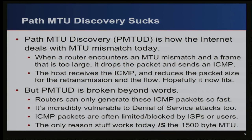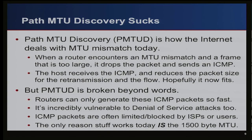Path MTU discovery — the mechanism for detecting MTU mismatches today — in a word, sucks. When a router encounters an MTU mismatch, it drops the oversized packet, sends back an ICMP message, and the host is responsible for receiving that ICMP, detecting the problem, and reducing packet size on that flow going forward.